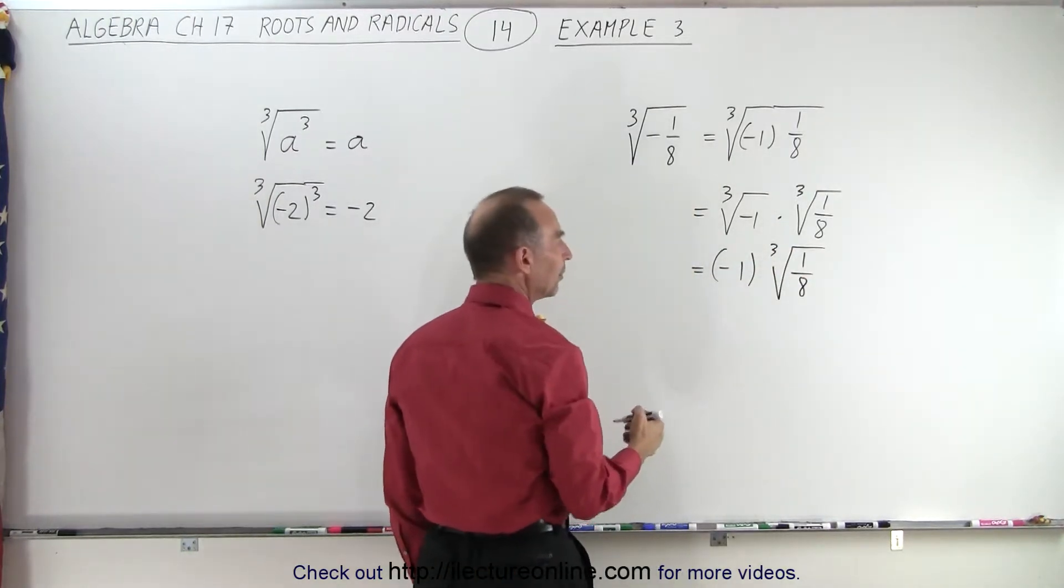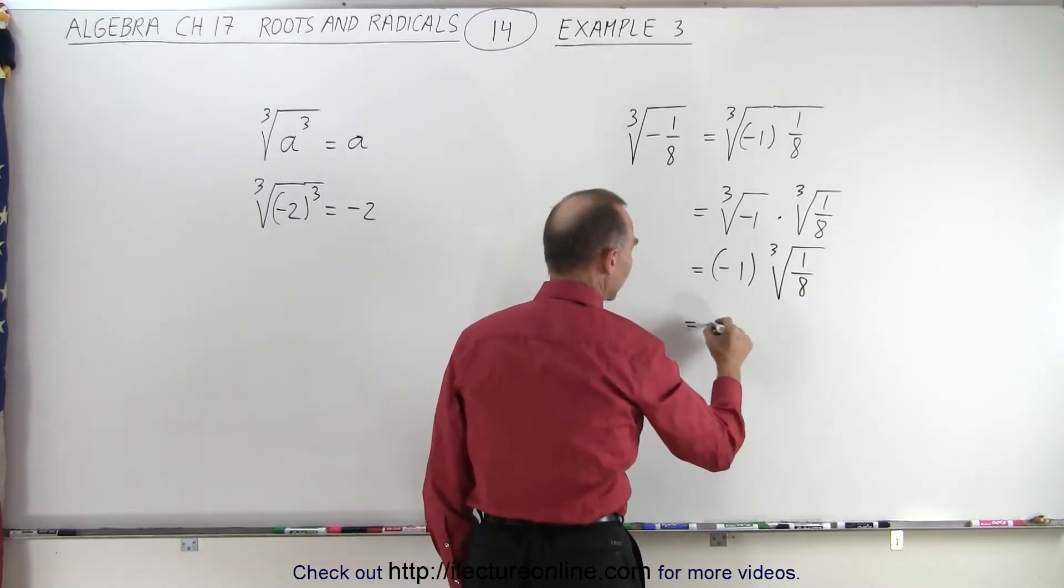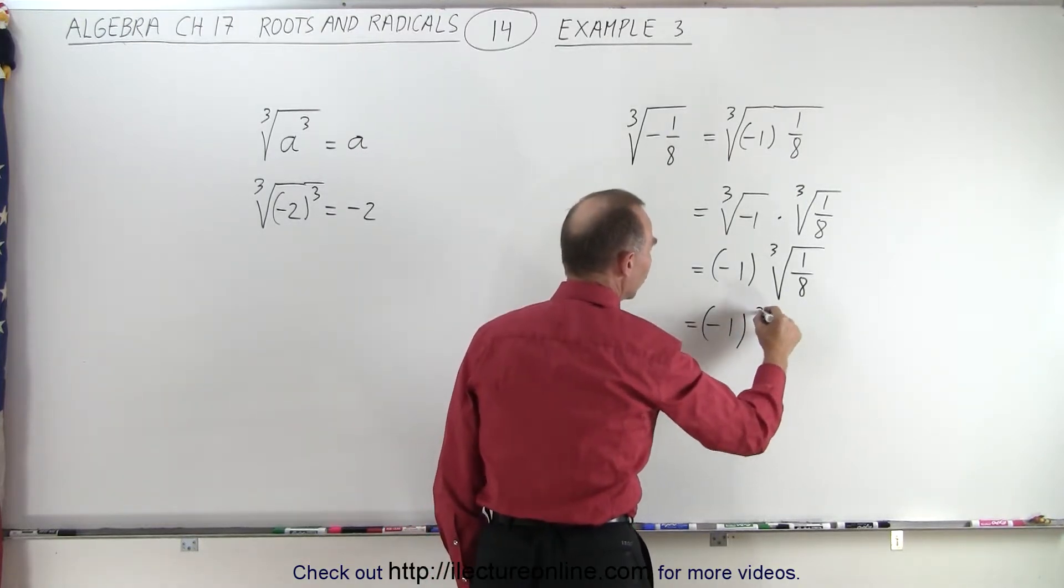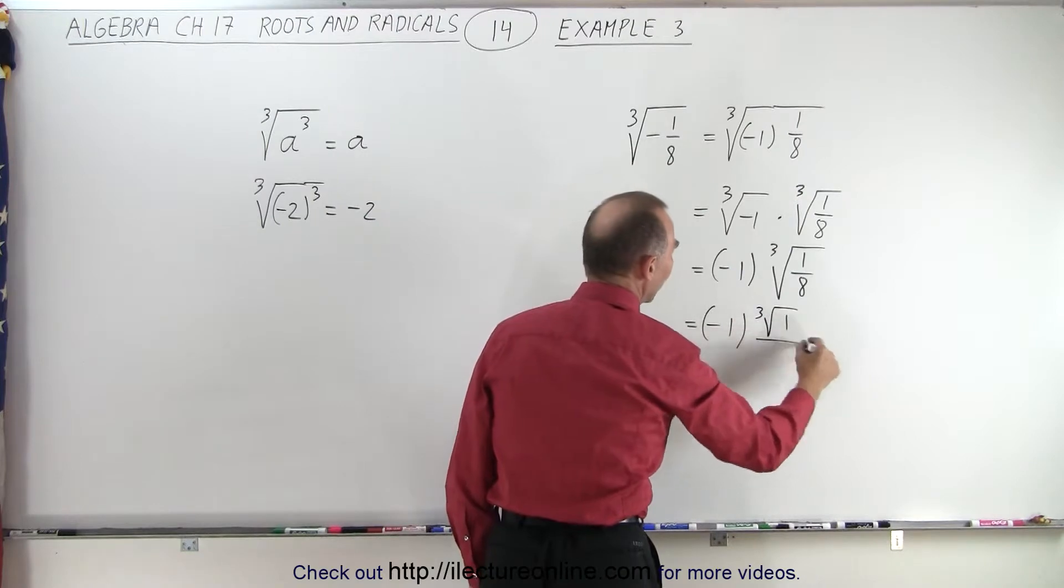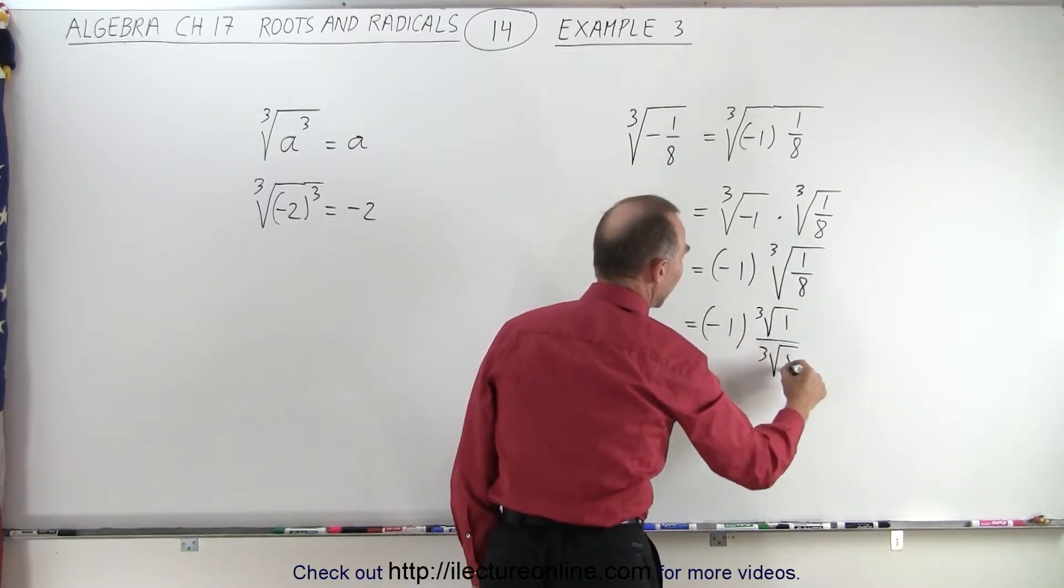And then we can separate these because that's a fraction, so this can be written as negative 1 times the cube root of 1 divided by the cube root of 8.